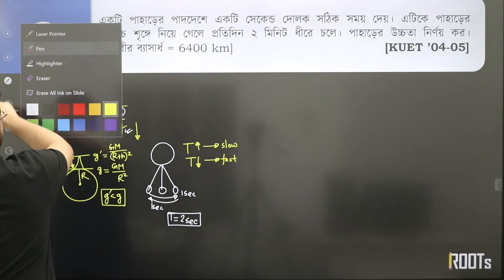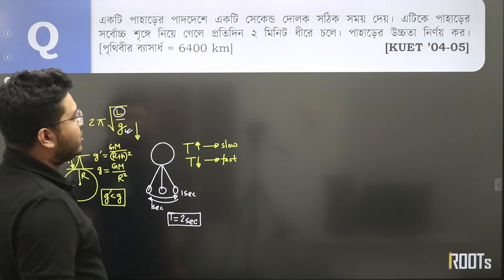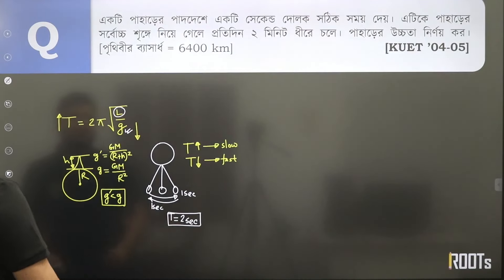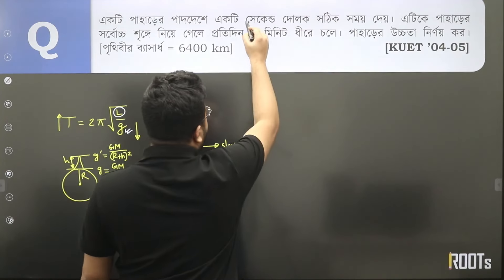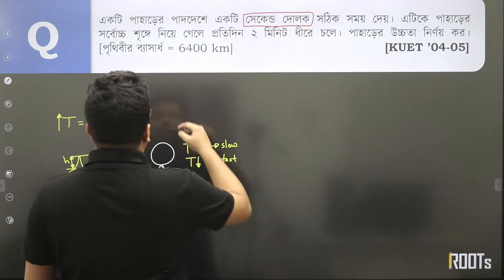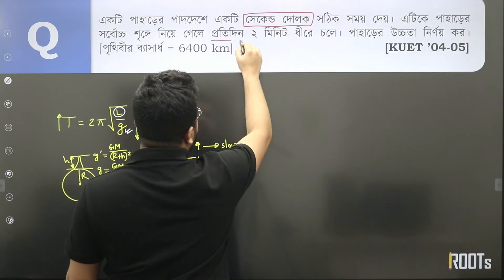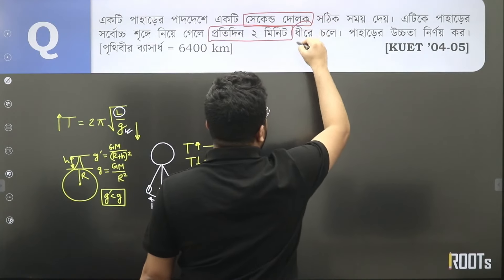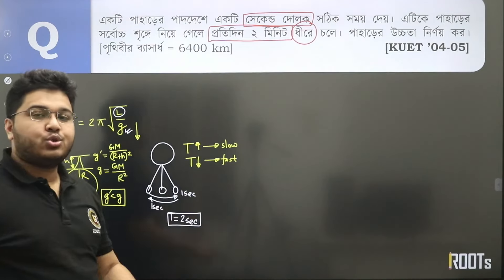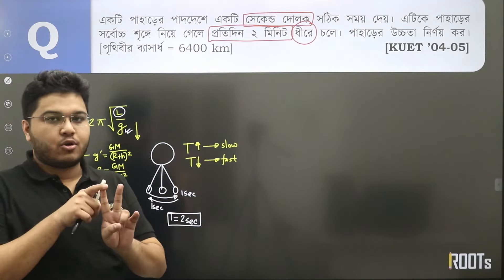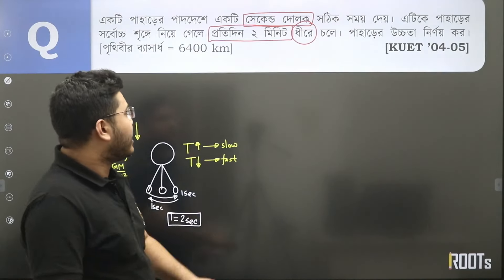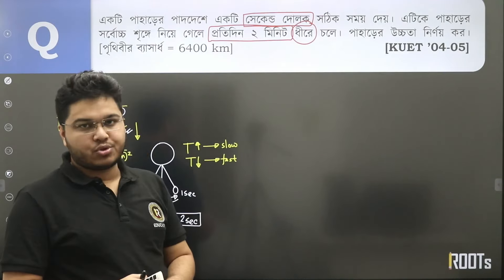সেটা আসল আমাদের দোলনকাল ঠিক। আমরা খুব সহজে নির্ধারণ করি আসলে এটা অঙ্ক সলভ করতে গেলে সহজে ভালোভাবে আমাদের আয়ত্তে আসবে। কী বলা হচ্ছে — একটি পাহাড়ে পাদদেশে একটি সেকেন্ড দোলক অর্থাৎ যার দোলনকাল হচ্ছে দুই সেকেন্ড। সঠিক সময় এটি কে পাহাড়ের সর্বোচ্চ শৃঙ্গে নিয়ে গেলে প্রতি দুই মিনিটে কি চলে — সেটা হচ্ছে ধীরে চলে।